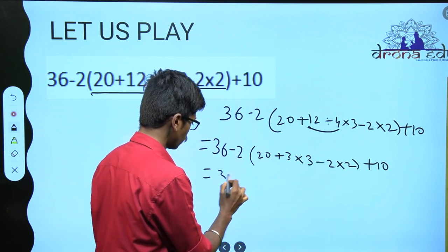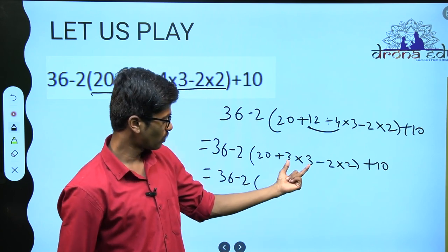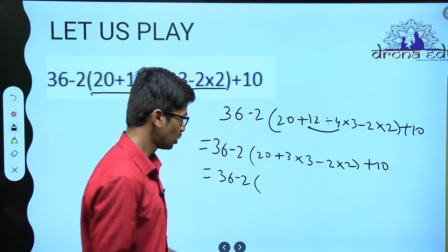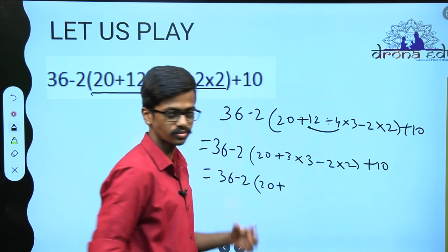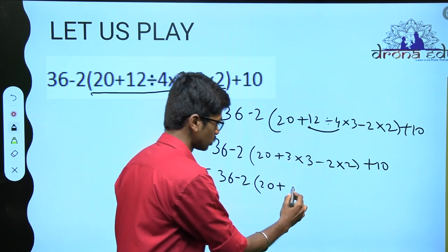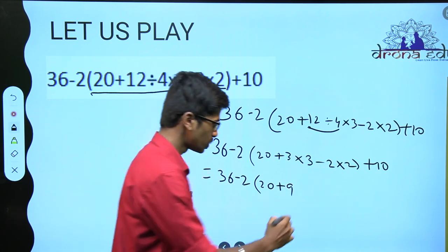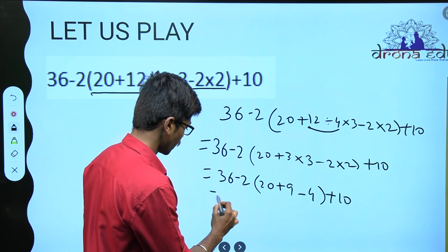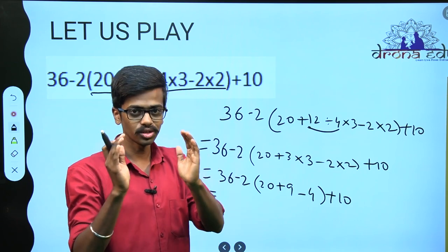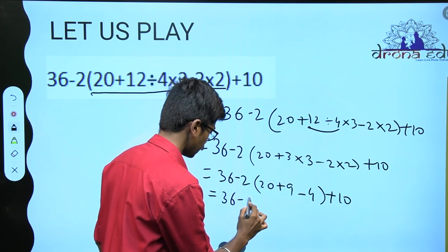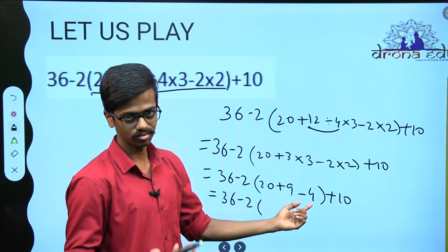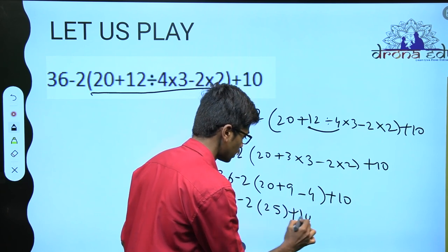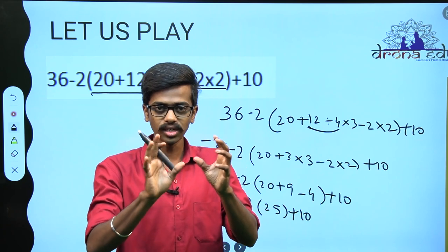36 minus 2 into — we have one multiplication here and one multiplication here. Division is done, now multiplication. We will do all the multiplication together. We have 3 into 3, what is 3 into 3? Simple — 9. Minus 2 into 2, how much is that? 4. Plus 10. So the sum became even easier to solve — all the numbers are becoming smaller and smaller.